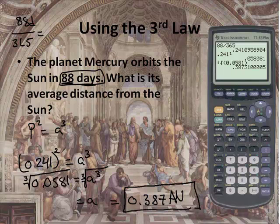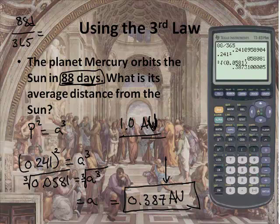The average distance from the sun for Mercury is 0.387 astronomical units, whereas for Earth it's 1 astronomical unit — 1 AU. That's the distance from the Earth to the sun, and 0.387 AU is the distance from the sun to Mercury.